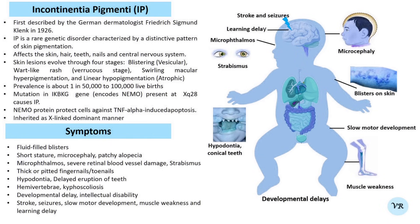Developmental delays, intellectual disability, seizures, and skeletal abnormalities or hearing loss. Mutation in IKBKG — inhibitor of kappa-B kinase gamma — gene causes incontinentia pigmentation.